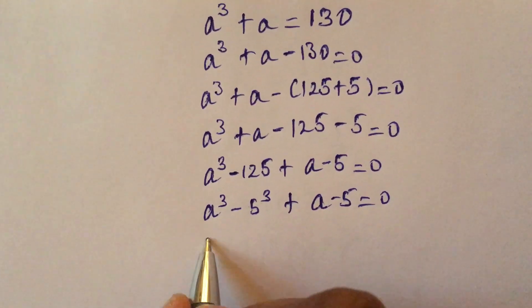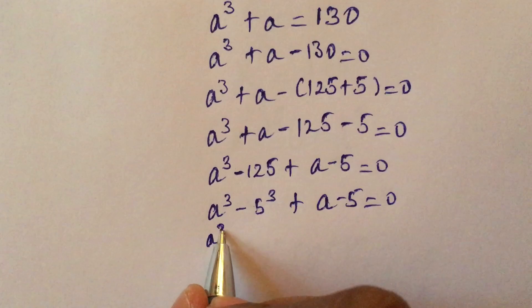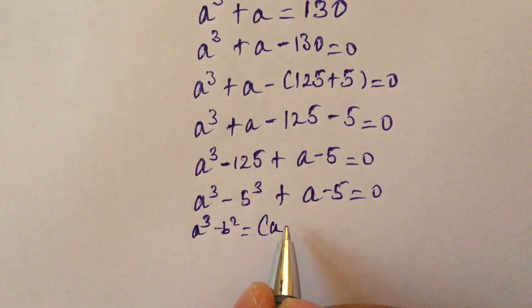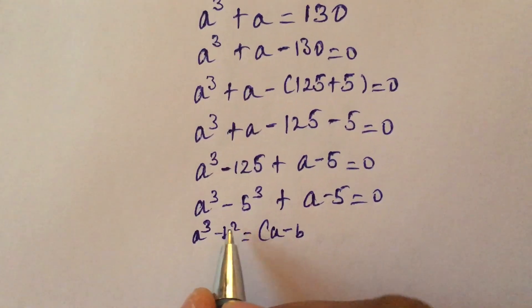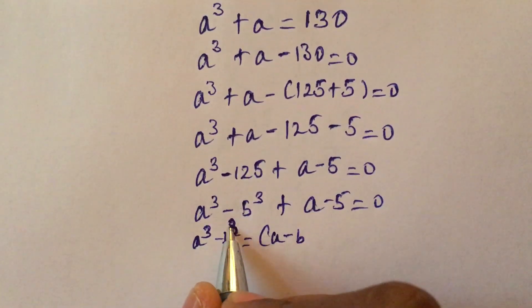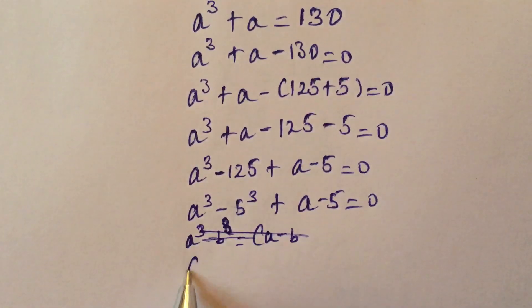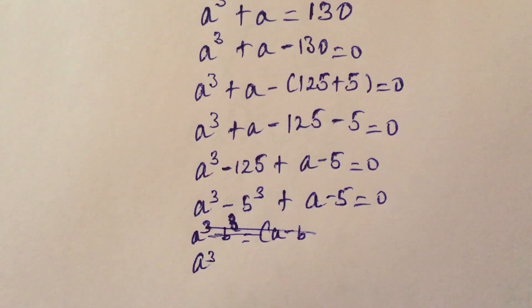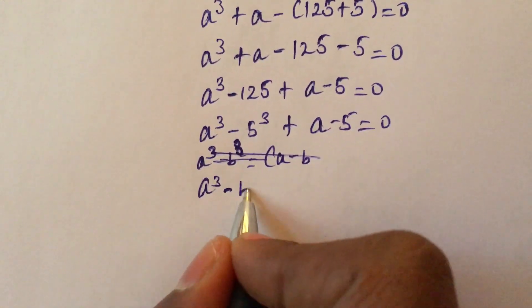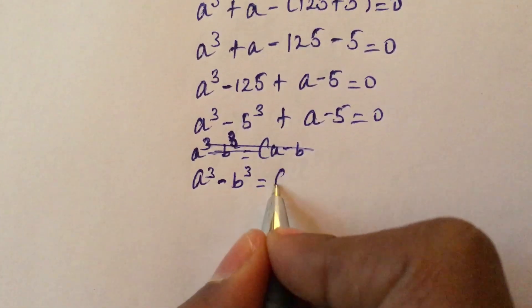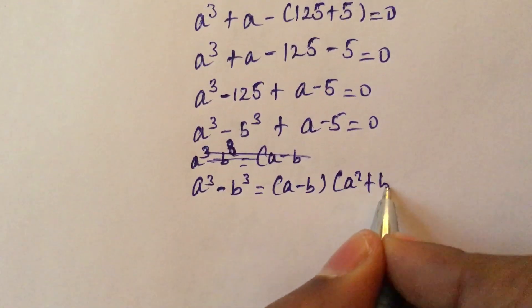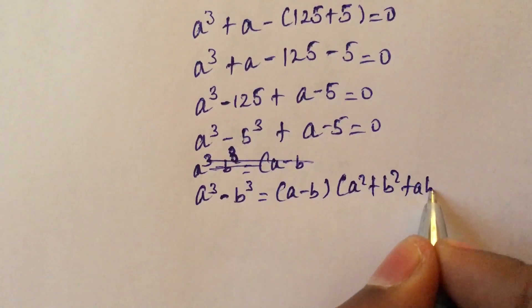We will apply the difference of cubes formula: a cubed minus b cubed equals a minus b times a squared plus b squared plus ab.